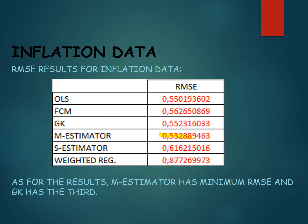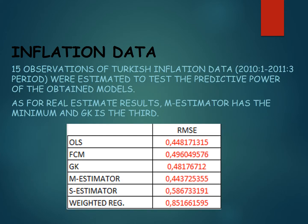As for the RMSE results, the M-estimator has the minimum RMSE and Gustafson-Kessel is the third minimum value. For real-estimate results forecasting 15 observations of Turkish inflation data from January 2010 to March 2011, M-estimator again has the minimum and Gustafson-Kessel is the third.